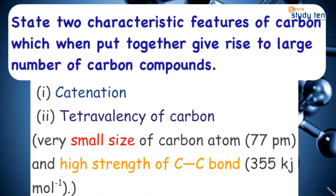This question is about what makes carbon form a large number of compounds — the versatility of carbon. The first reason is catenation. Catenation is the self-linking property of an atom, where the same atoms link to form long chains and branches. That is catenation.